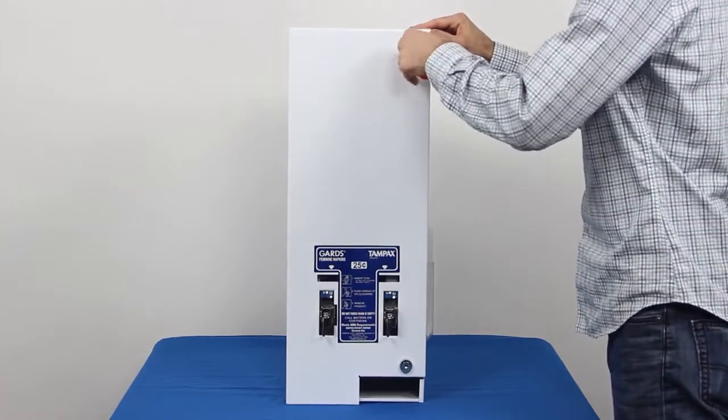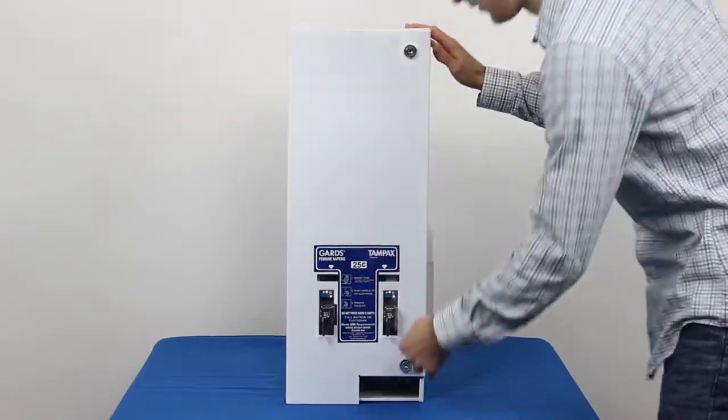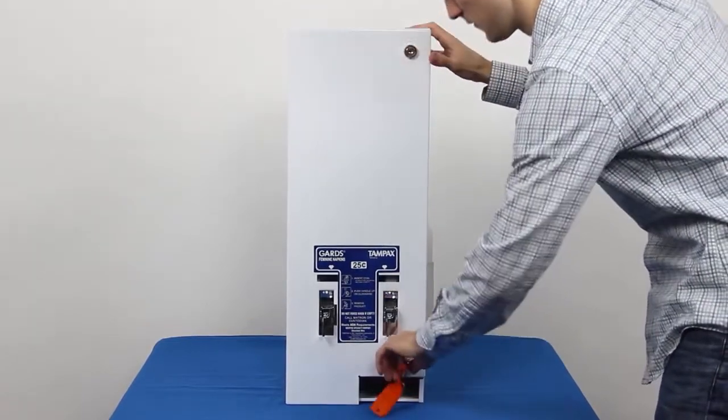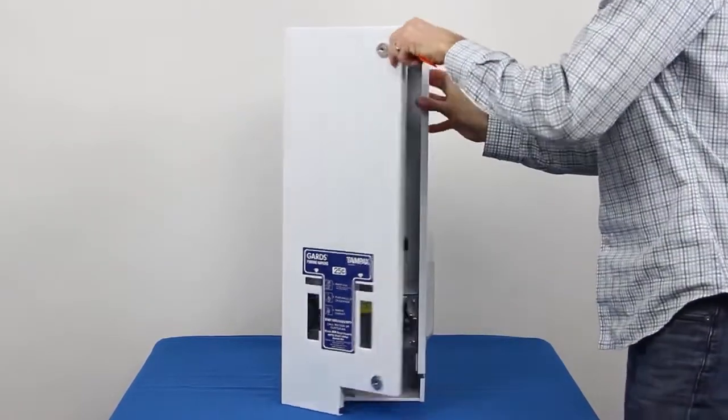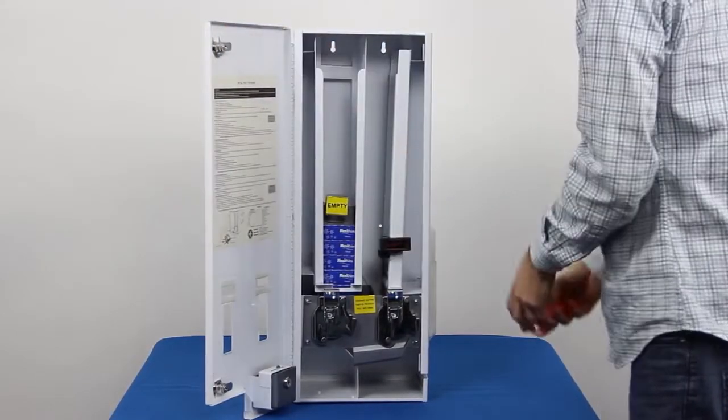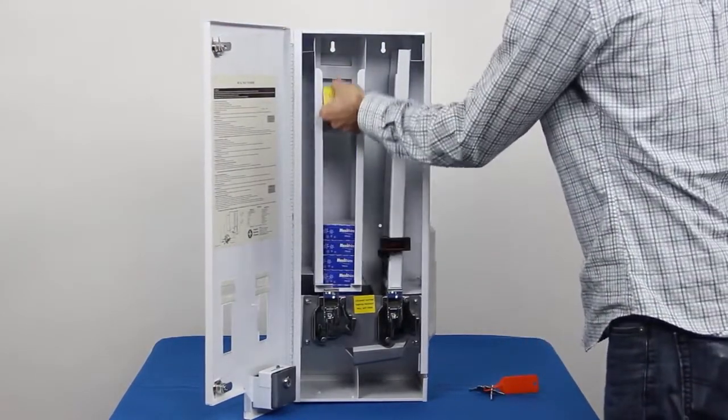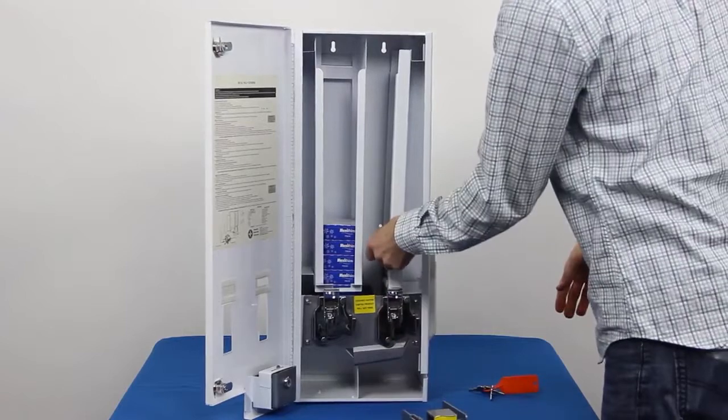First, unlock the top and bottom lock on the outside of the machine and open the door. Next, remove the weights from the product channels and remove all product from inside the machine as well.